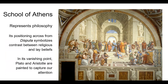The School of Athens is particularly notable because of its fusion of philosophy and science. It is cleverly positioned on the wall across from Disputa, emphasizing the contrast between religious and secular ideas. This makes the School of Athens a perfect representation of the social climate of the Renaissance, which is characterized by its shift from religious into more modern ideas.